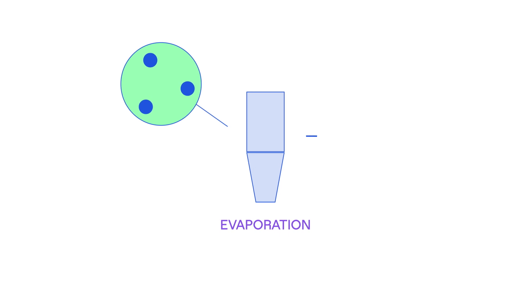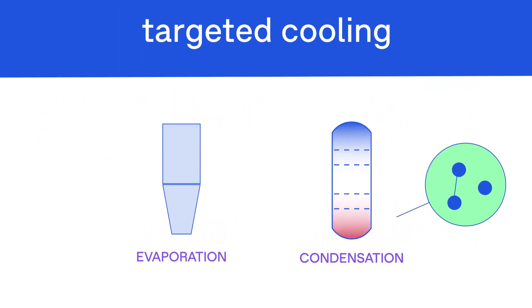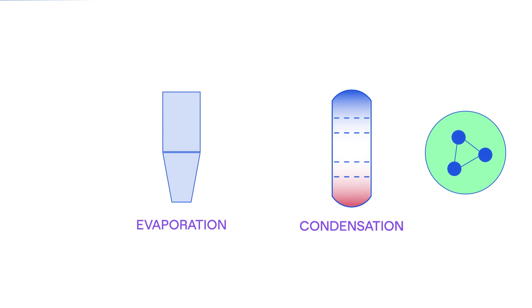Next, we cool the gas in a controlled way. The heavier gas oil condenses first and collects at the bottom of the condensator, while lighter substances like naphtha and liquid gas are collected further up.